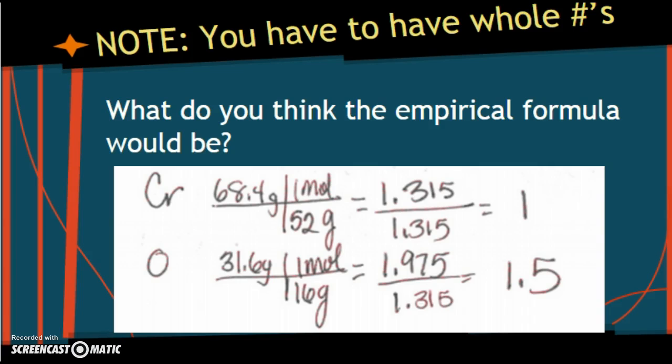Note, you have to have whole numbers. So what do you think the empirical formula would be? It is not Cr-101.5. You have to have whole numbers because you can't have half an atom.